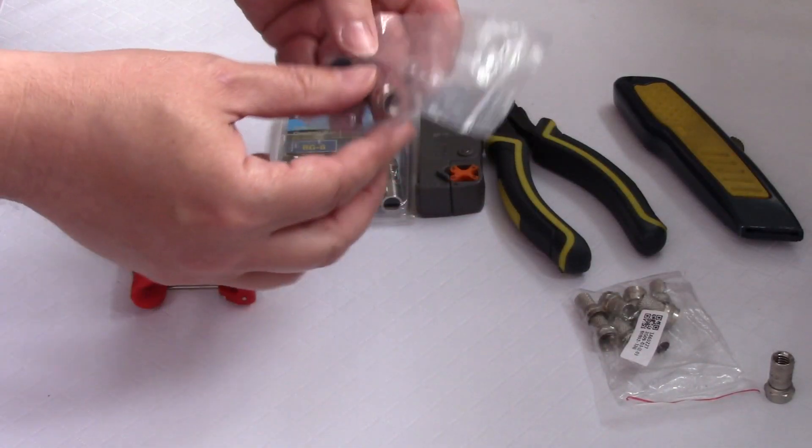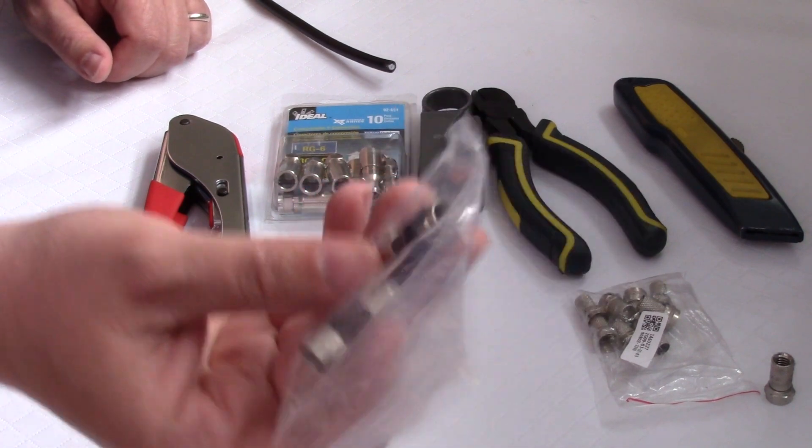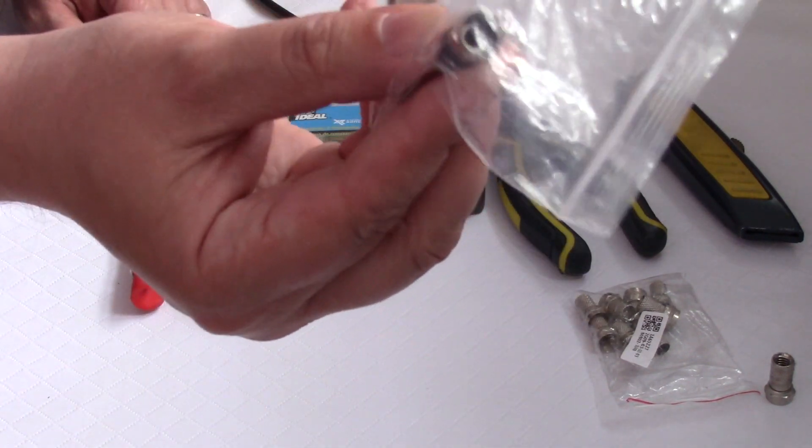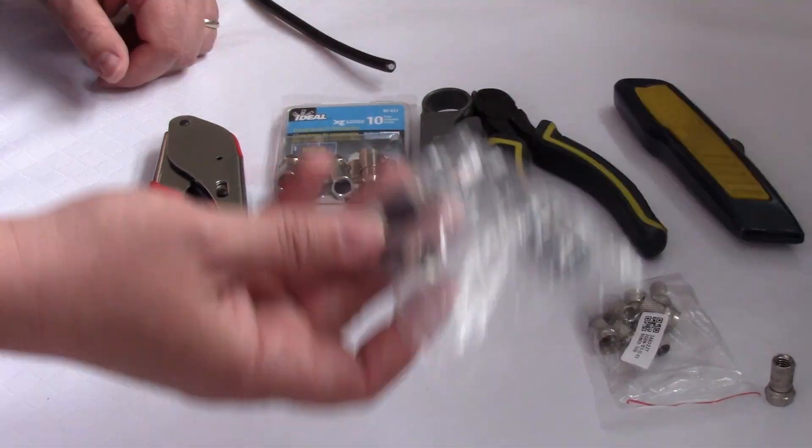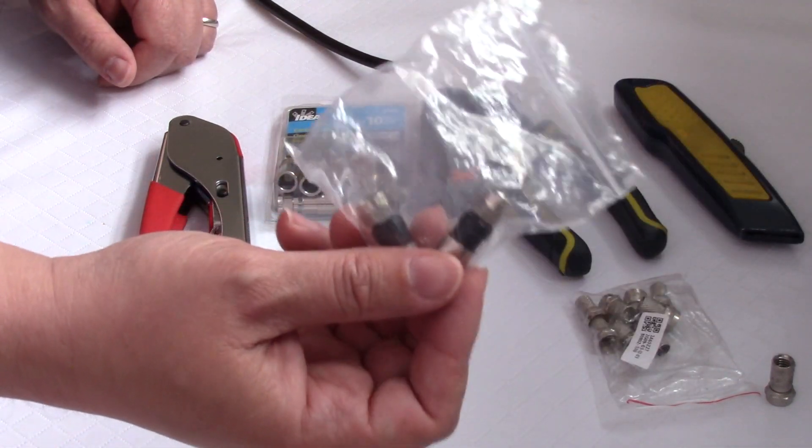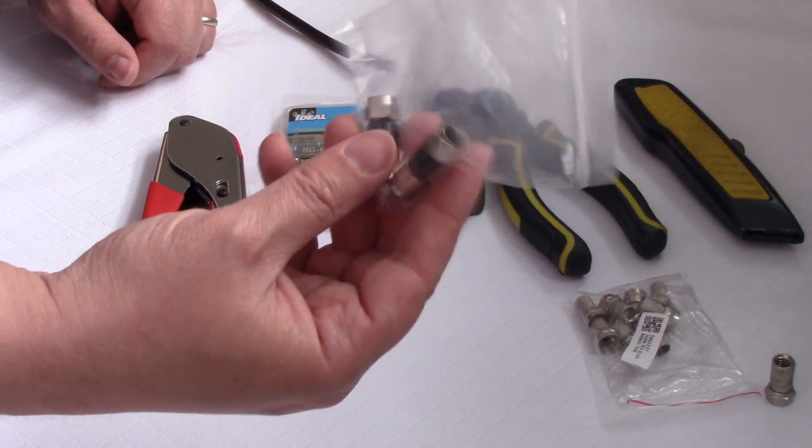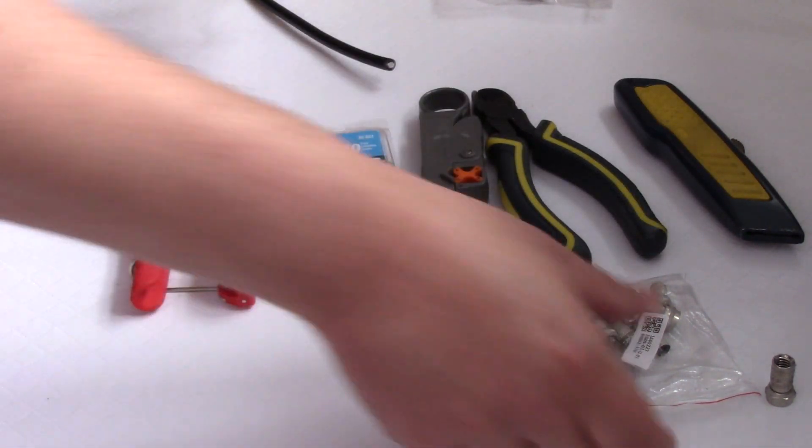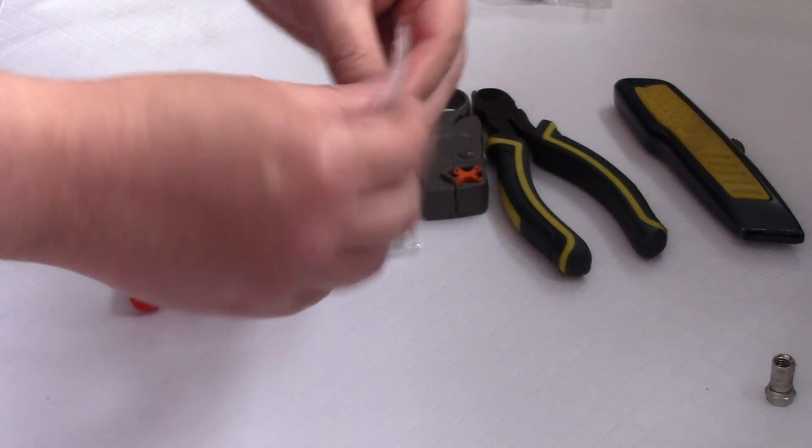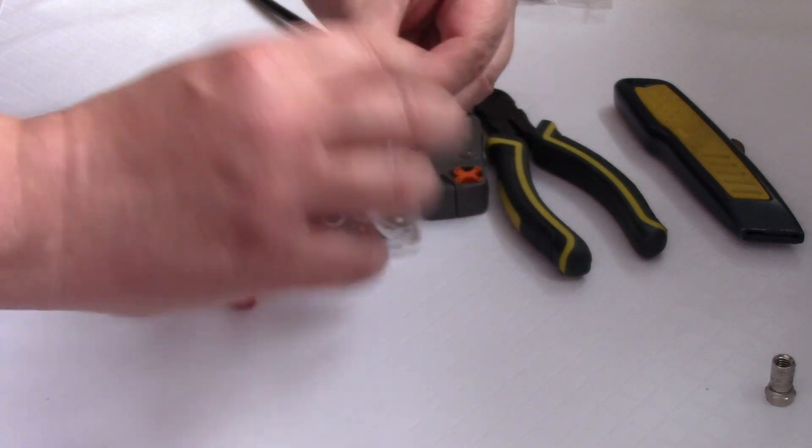I got these at Home Depot. Another place you can order online is these rubber-ended water type of F connectors. And if you order these from China, you can get them pretty cheap. Like a bag with 10 for a couple bucks. Home Depot is a little bit more expensive. But you want to be careful.